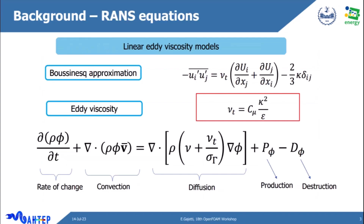Most of the RANS equations, or Reynolds-Averaged Navier-Stokes equations, are based on linear eddy viscosity models, which in turn are based on the Boussinesq approximation — that Reynolds stresses in turbulence are proportional to an eddy viscosity and are directly proportional to the mean strain rate. The viscosity is then modelled as the square root of the kinetic energy divided by the turbulent dissipation rate. The transport equation for a generic variable phi includes rate of change, convection, diffusion, and rate of production and destruction.